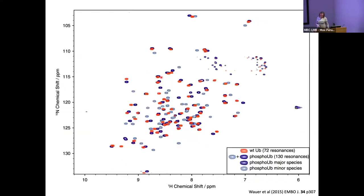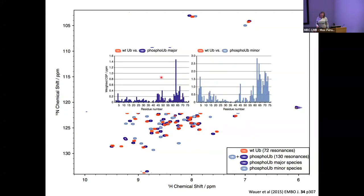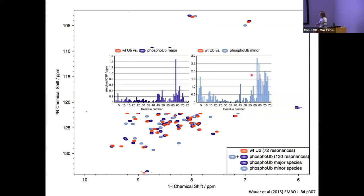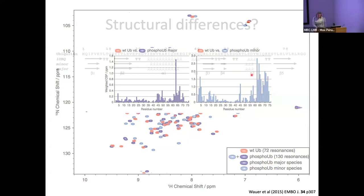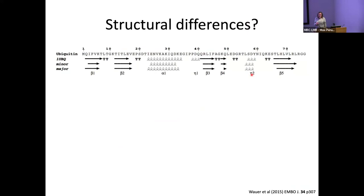Here we've got wild type in red, the major species in dark blue, and the minor species in light blue. Looking at the relative peak positions with our chemical shift perturbation map, when you compare wild type ubiquitin with the phosphorylated major species, you get chemical shift perturbations around the phosphorylation site — which makes sense because the phosphorylated serine has a different chemical environment. But comparing the wild type with the minor species, you get really large changes in the chemical shift perturbation map, especially at the C-terminus.